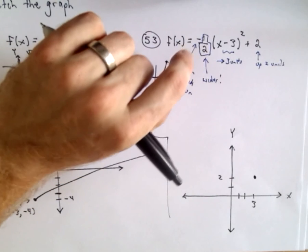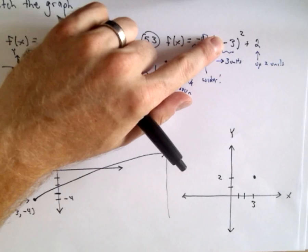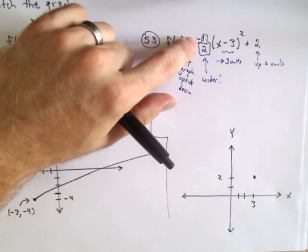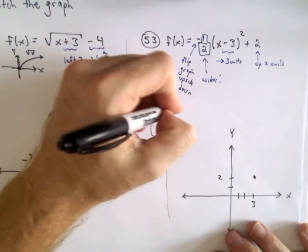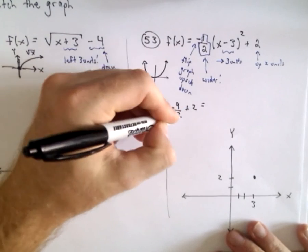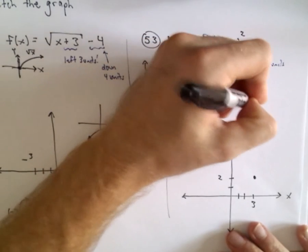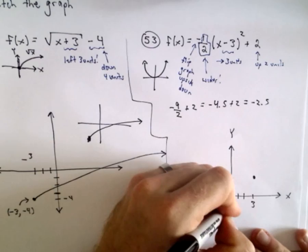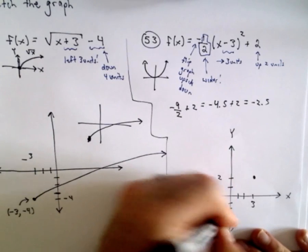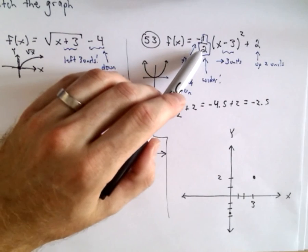So x equals zero, we have negative three squared which will be nine. Nine times negative one half, that would be negative nine halves. Plus two. Well negative nine halves, that's what, negative four point five? Plus two, that's negative two and a half. So there's one two three, it's going to cross down there.